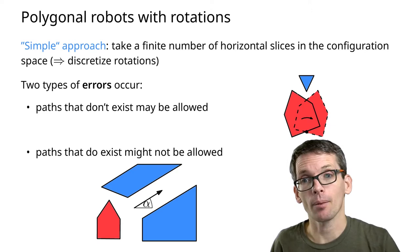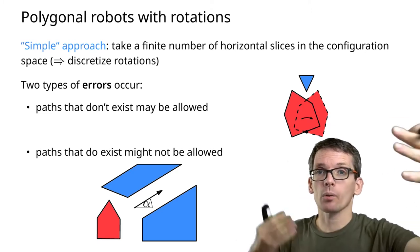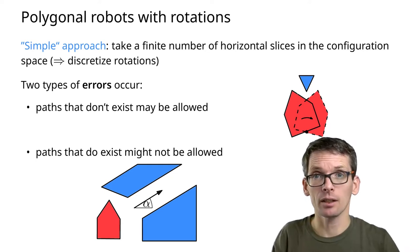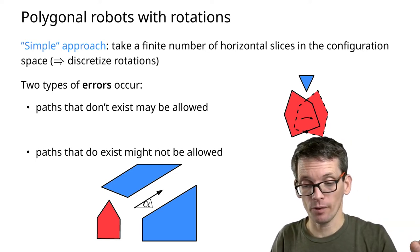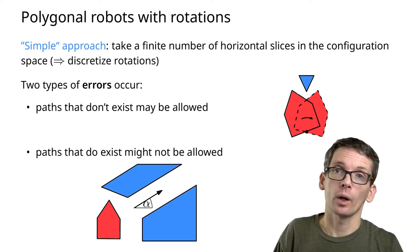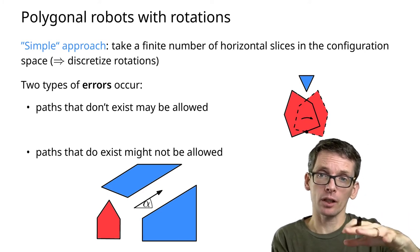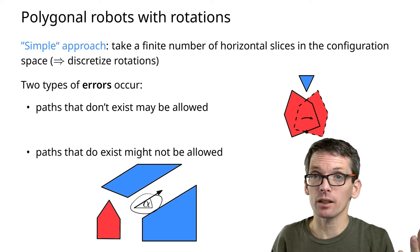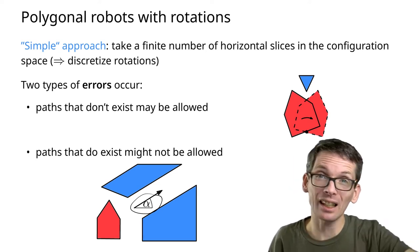Here's another error that might happen. First we had an error where there is no path, or at least that path doesn't exist, but we thought it was there. Here we have an error where there is a path, but because of the discretization,